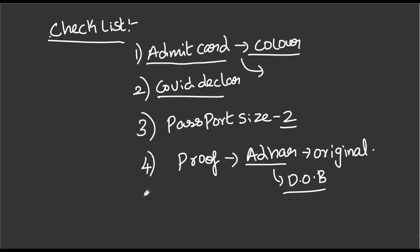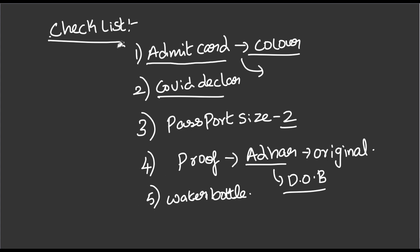If you want to know about the water bottle — you will have a wrap. You will be able to know about the flask and bottles. The first things needed are: admit card, COVID declaration, passport size photo, and proof.